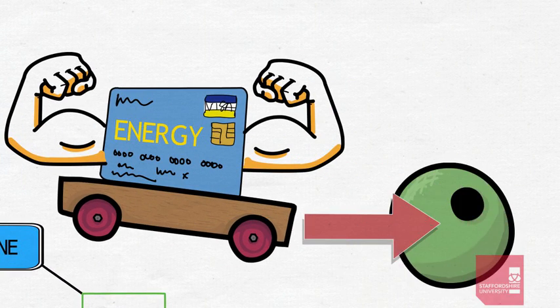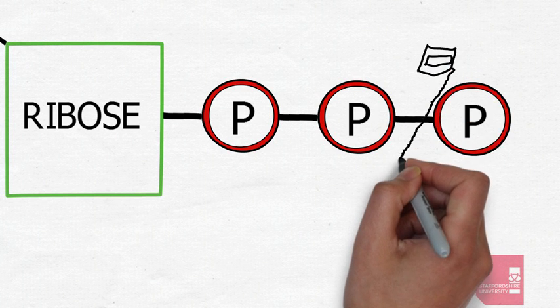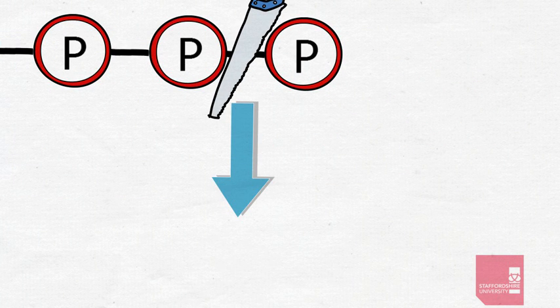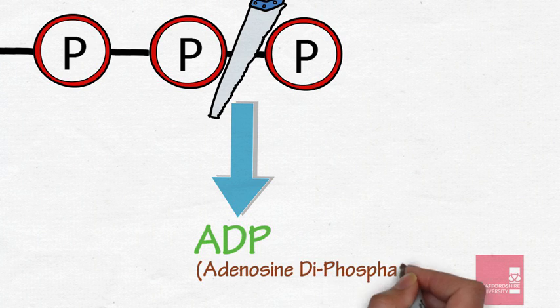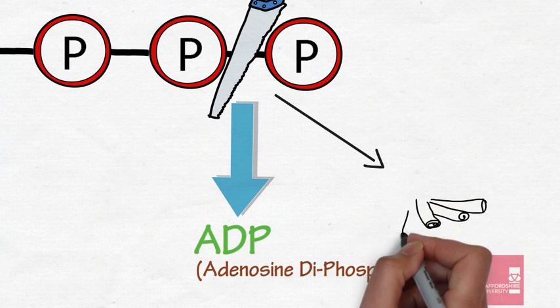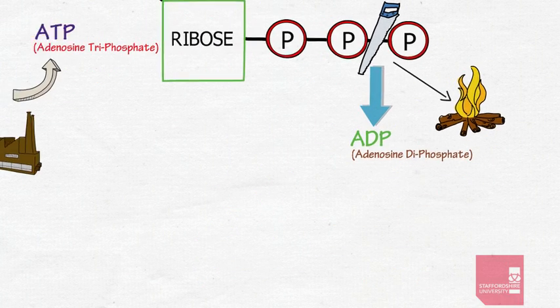During these reactions, one of the bonds between phosphate groups on ATP breaks, creating ADP or adenosine diphosphate, which only has two phosphate groups, and this releases the energy contained within the bond.